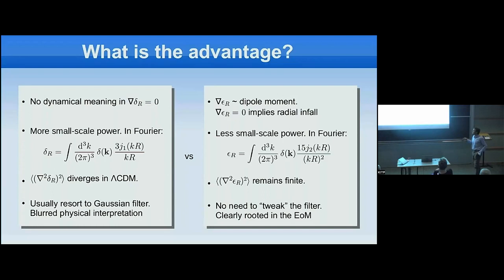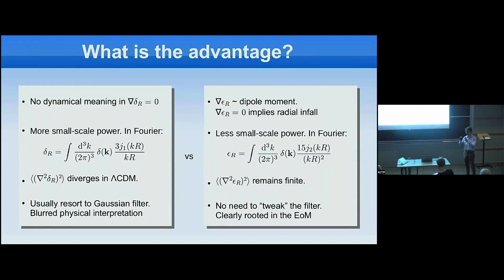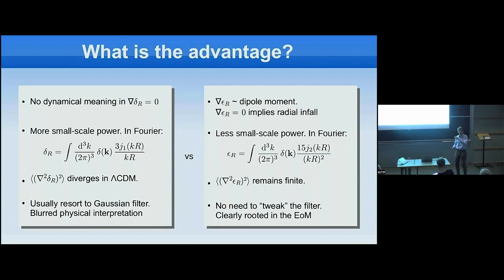What is the advantage? There is no clear dynamical meaning to the gradient of the density field, but there is a very nice dynamical interpretation of the gradient of the energy field. The first derivative of the energy field is the dipole moment of the sphere. Looking for peaks of the energy field therefore selects spheres with no dipole moment: in a multipole expansion of the acceleration at the boundary, the dipole term vanishes, so the infall is essentially radial and the acceleration points toward the center.